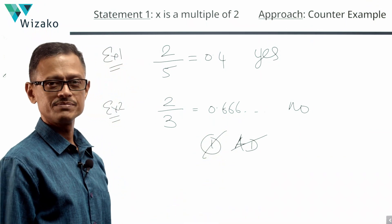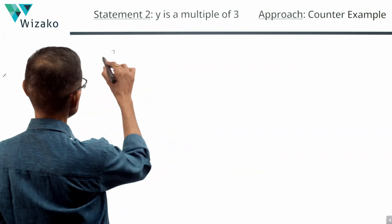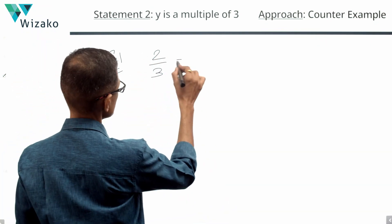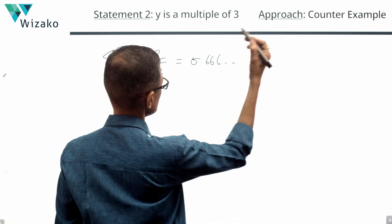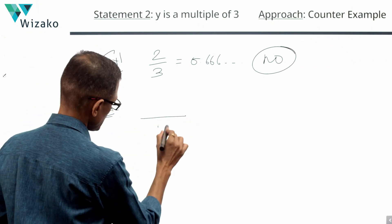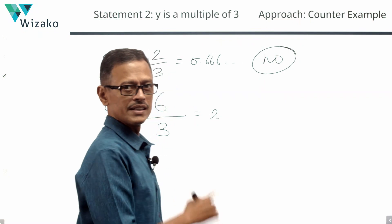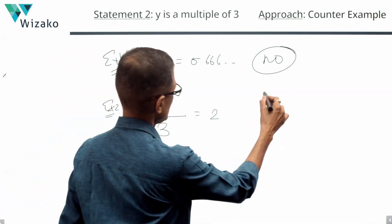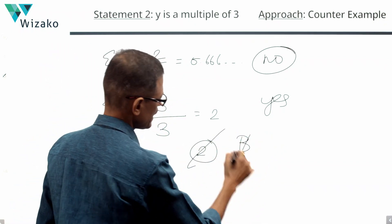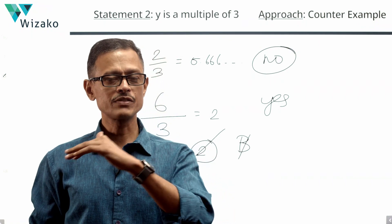Statement 2: y is a multiple of 3. Example 1: take 2/3 — y = 3 is a multiple of 3. Is it a terminating decimal? The answer is no; 0.6666 goes on as a non-terminating decimal. Example 2: take x = 6, y = 3. Then 6/3 = 2, which is an integer, and all integers are terminating decimals — answer is yes. Sometimes no, sometimes yes — no conclusive answer with Statement 2 either. Statements independently are not sufficient. With Statement 1 alone not sufficient we ruled out A and D; with Statement 2 alone not sufficient we rule out B. We are down to C or E.